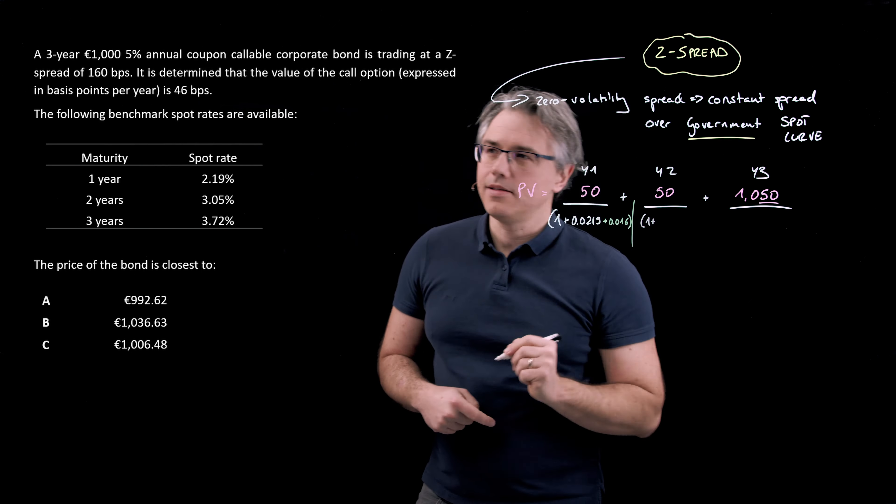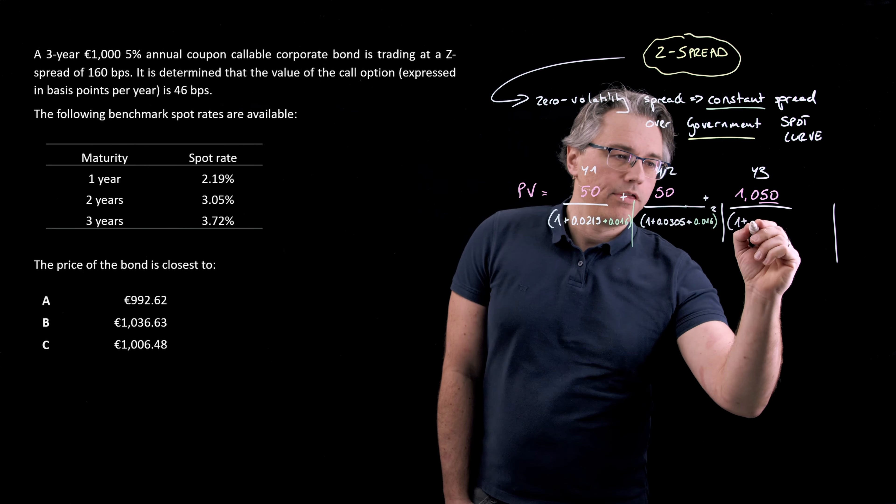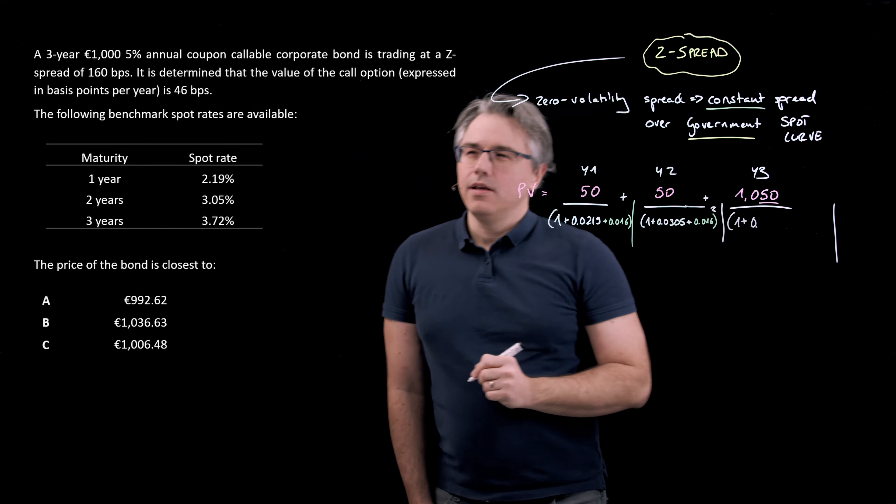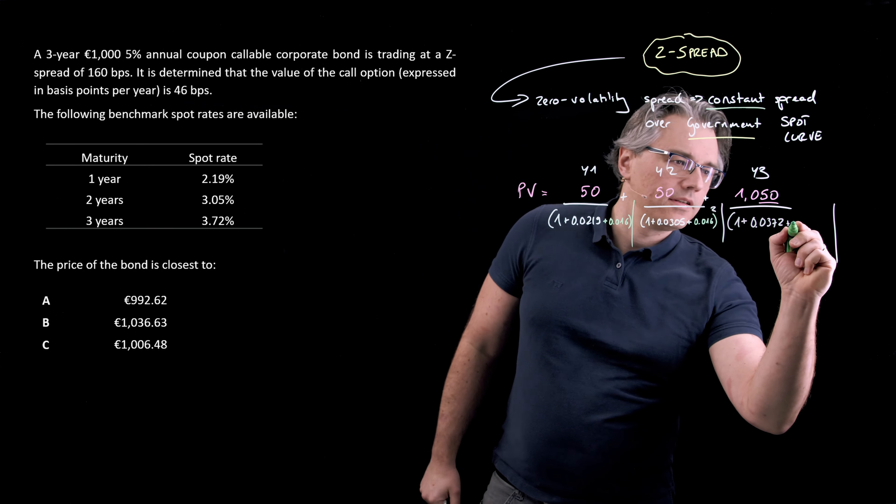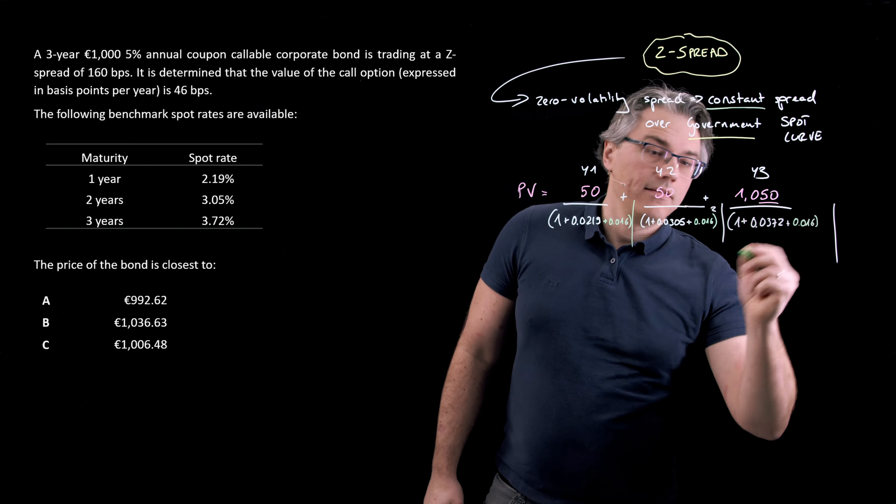And for the third one, 1050 discounted by a factor of one plus the three year spot rate 0.0372. And on top of this, once again, this constant 0.016 raised this time to the power of three. Our calculation is laid out. Let's now go to the calculator to perform this discounting.